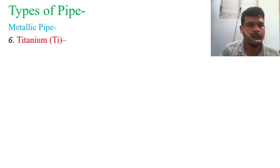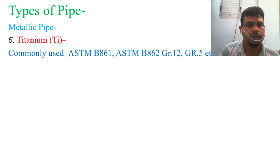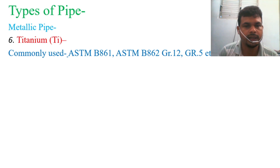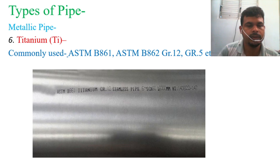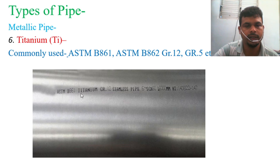Next is another metallic pipe — the titanium pipe. Titanium pipe commonly uses grades ASTM B861, ASTM B862, Grade 12, and Grade 5. These are typical examples only; you can find many more grades in ASTM. In the photos, you can see the marking ASTM B861 titanium grade.